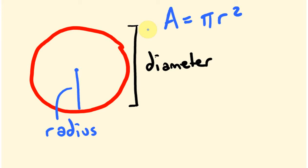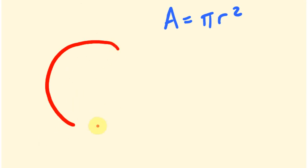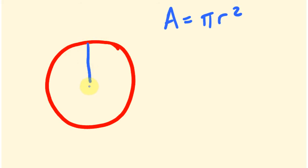These are the types of questions you'll get when asked to work out the area of a circle. I'm going to leave that formula there because we're going to be using it a lot. Say we had a circle and we wanted to work out the area. The radius we know to be 5 centimeters.